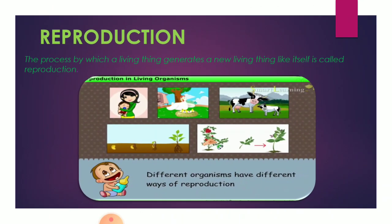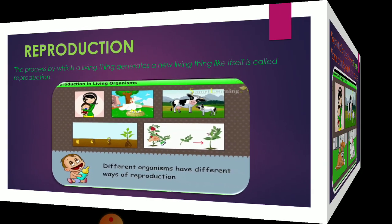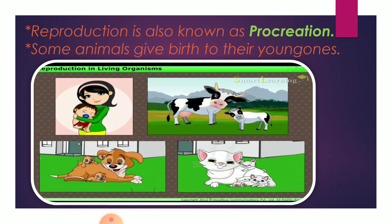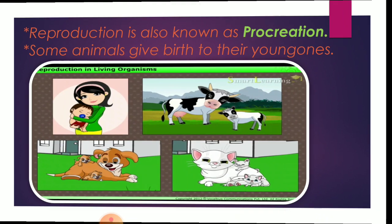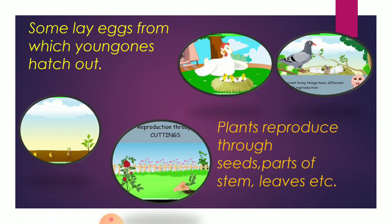The next characteristic is reproduction. The process by which a living thing generates a new living thing like itself is called reproduction. Different organisms have different ways of reproduction. Reproduction is also known as procreation. Some animals give birth to their young ones — for example, a mother gives birth to a child, a cow gives birth to a calf, a dog gives birth to a puppy, and a cat gives birth to a kitten. Some lay eggs from which young ones hatch out. Plants reproduce through seeds, parts of stem, and leaves.